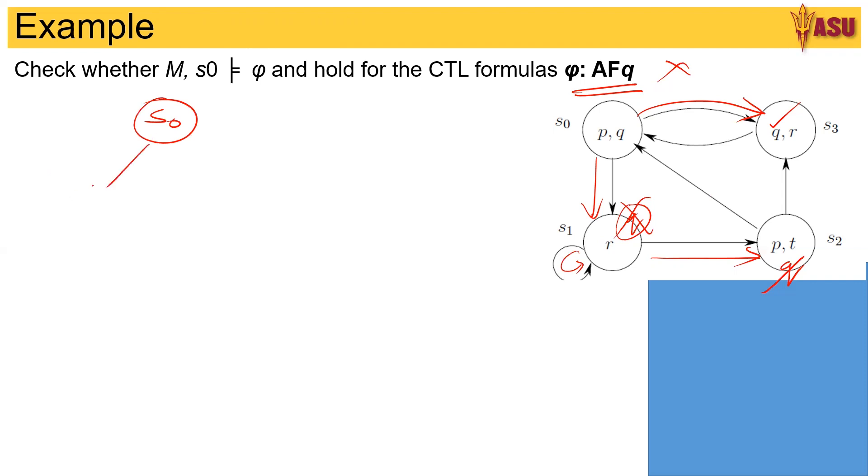S0 goes to s1 and it goes to s3. Now s3 has a q, so this is a value. I put a tick over there to say it goes. Now what about s1? S1 goes to s2 and s1 goes to s1 again.